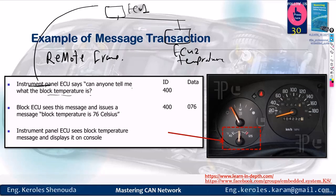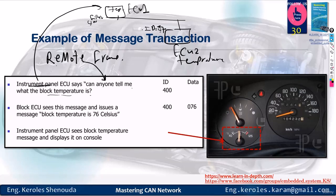Who filters this ID? ECU1 — it has a filter that if it receives ID 400, it accepts it. When it gets the 400, it looks at the data, which is the temperature data. The instrument panel ECU has sent a remote frame, saying 'can anyone tell me?' — sending a remote frame with ID 400. In the remote frame, it sends the ID it wants to receive. When any node on the CAN bus receives a remote frame, it's supposed to send to it.